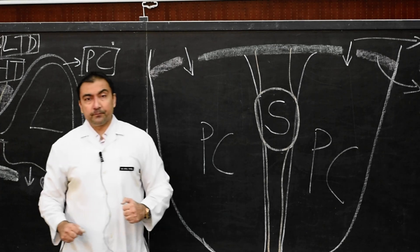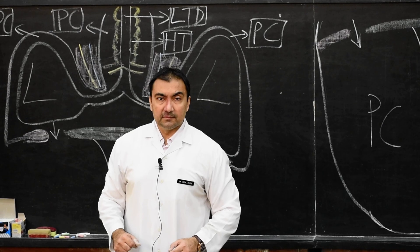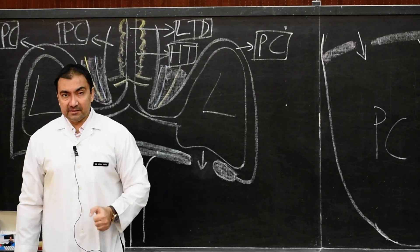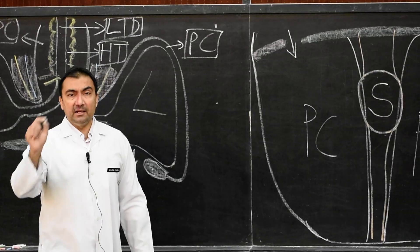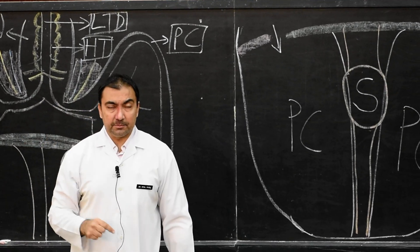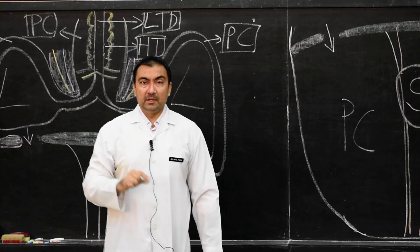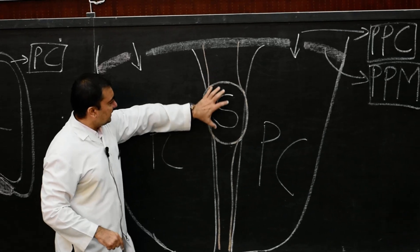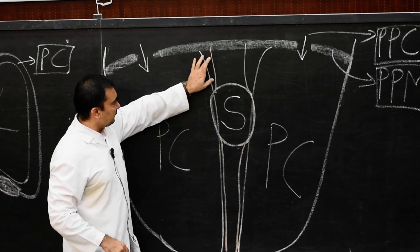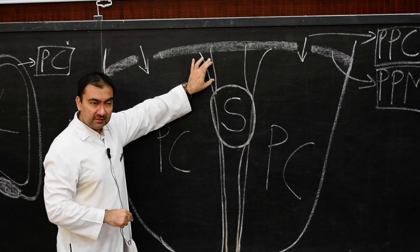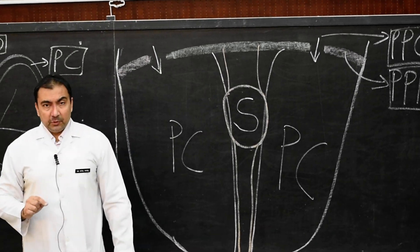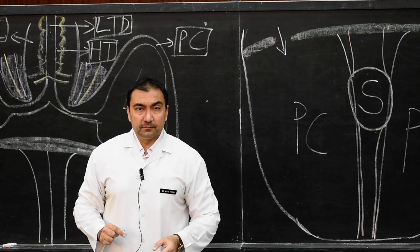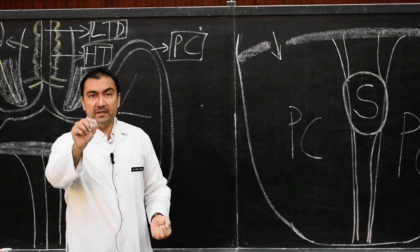Third point: during the first stage, there will be development of two pneumoenteric recesses — the right and left pneumoenteric recesses (spelling: P is silent). They will develop within the dorsal mesentery of the esophagus. Above the stomach is the esophagus, so within this space there will be development of right and left pneumoenteric recesses in the dorsal mesentery of esophagus. Next, very important: out of these two, there will be disappearance of the left pneumoenteric recess, so the right pneumoenteric recess will remain.